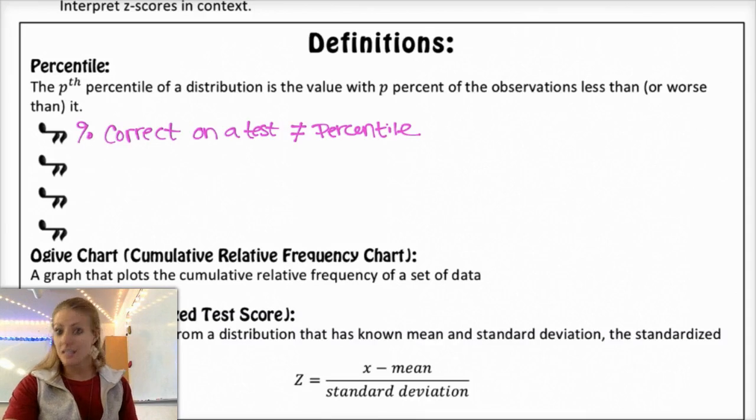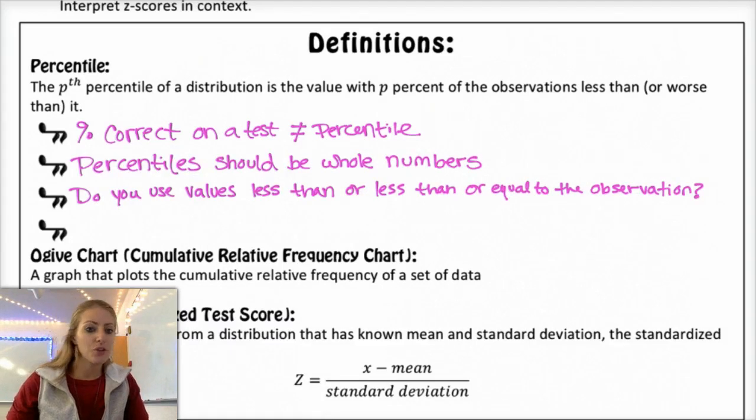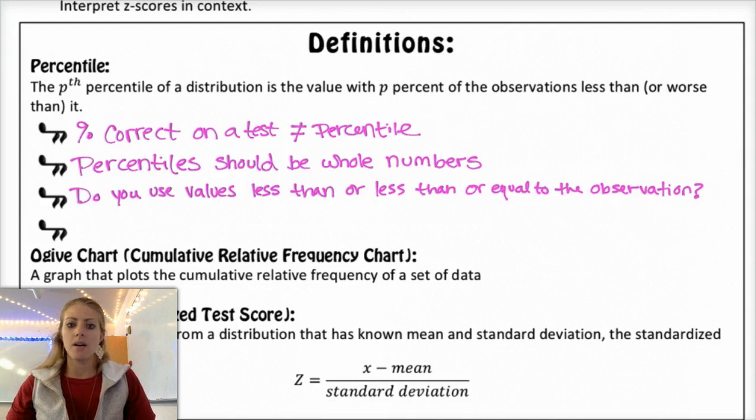Oftentimes I get the question, do you use values less than the observation or less than or equal to the observation when you're finding percentiles? And honestly, it actually doesn't matter as long as you're consistent and you understand what your numbers mean. For example, if you used values less than or equal to your observation, if you got the highest score in the class, you would be in the 100th percentile. As opposed to if you had the lowest score in that case, you'd actually be in the 10th percentile, even though there's nobody below you.